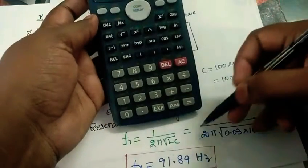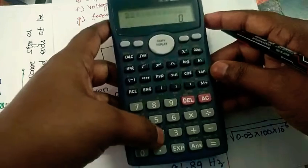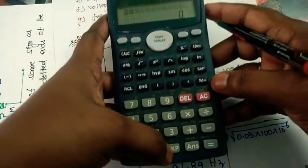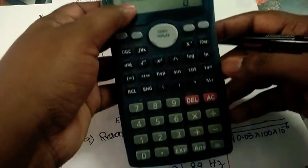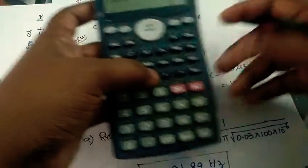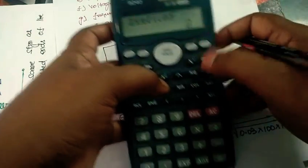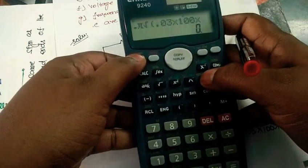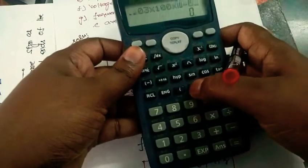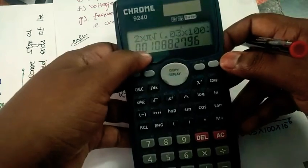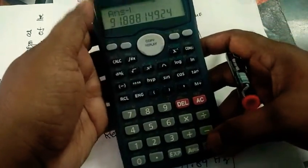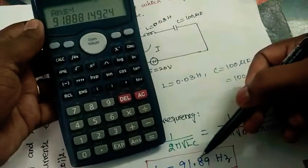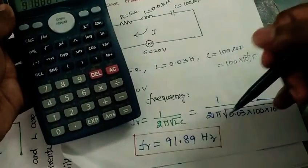Let me show the calculator steps. First calculate the denominator value. 2 into pi, press shift exponential for pi, which gives 3.14, then 2 into square root of, open bracket 0.03 into 100 into 10 power, press shift log for the exponent, minus 6, close bracket, equals. This gives 0.010. The inverse is 91.89. So that is our resonance frequency.